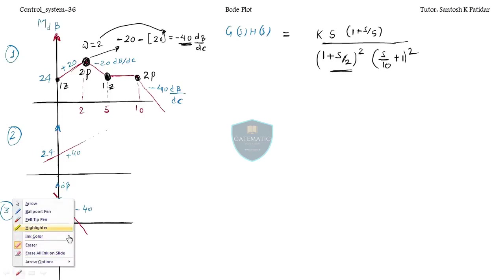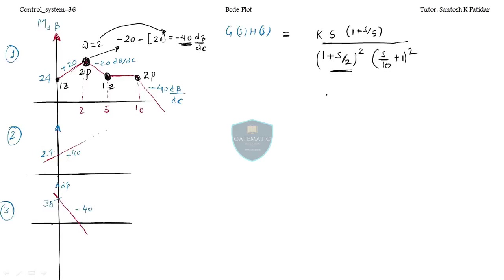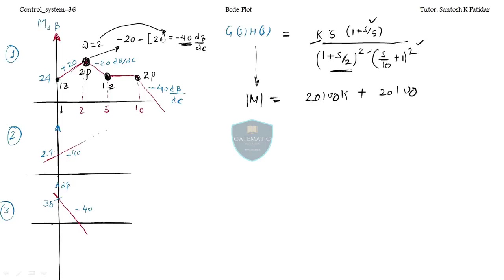We still need to find the k value. To do that, I'll compare the magnitude at a known frequency. The known frequency given is ω=1. Since the corner frequencies 2, 5, and 10 are all greater than 1, those terms are neglected. The magnitude equation becomes: 20 log k + 20 log ω.